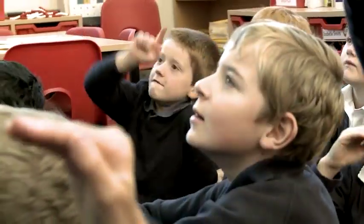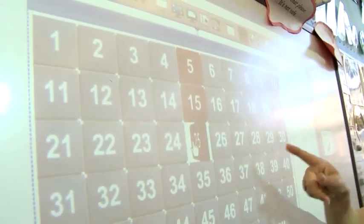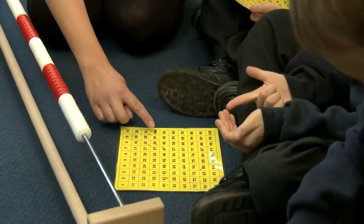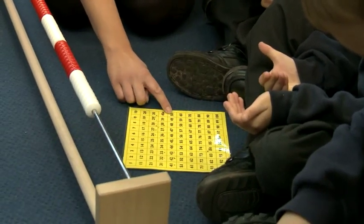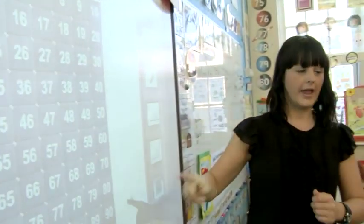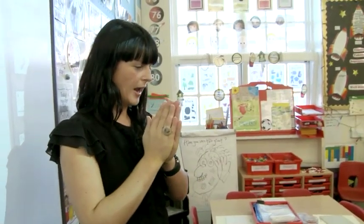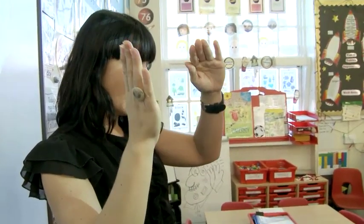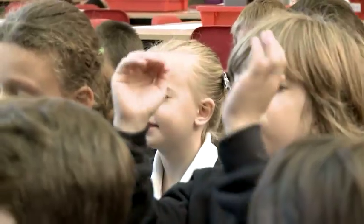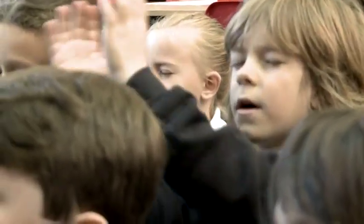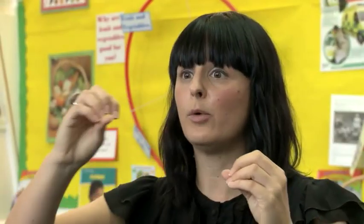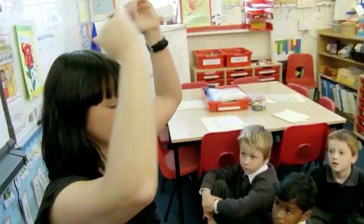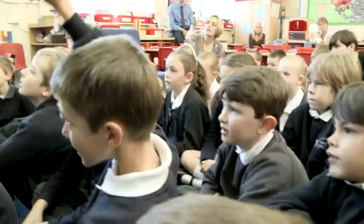Five, ten, fifteen, twenty, twenty-five, thirty. Ten fives are fifty. Eyes closed, counting in fives — picture that hundred square in your head. Five, ten, fifteen, twenty, twenty-five, thirty, thirty-five, forty, forty-five, fifty. What we're trying to do is give them lots of different visual images of number, but also kinesthetically what counting in fives means, what multiples of fives end in, and realising that there's a pattern to a lot of these tables.